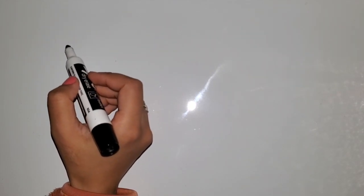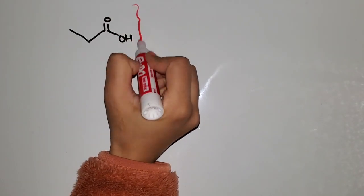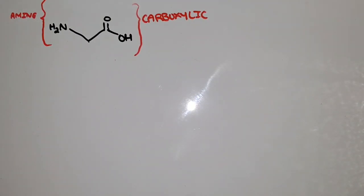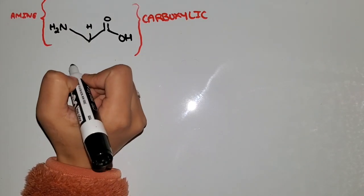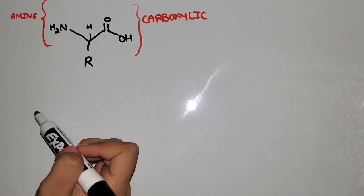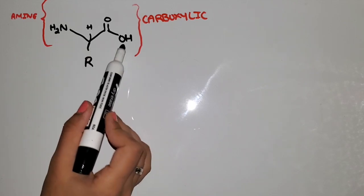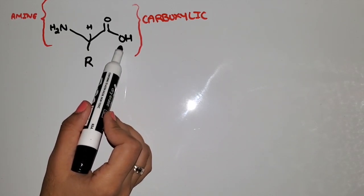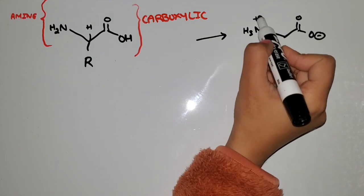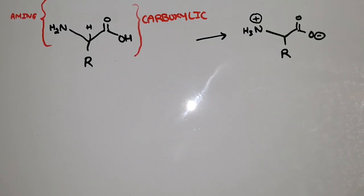Let's begin with the basic structure of an amino acid. We have a central carbon connecting a carboxylic group, an amine group, a hydrogen — which is usually not drawn but you should be aware that it's there — and lastly, the fourth thing is the R group. In acidic conditions, the amine group becomes protonated and becomes positively charged.